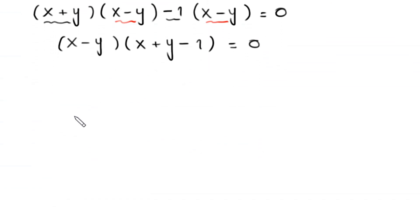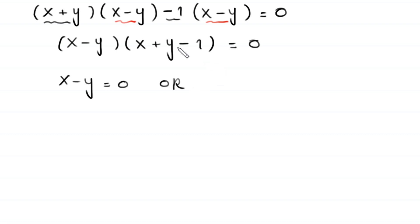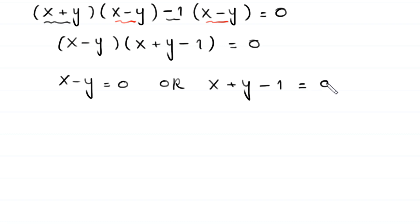From the factored equation, either x minus y equals 0, or x plus y minus 1 equals 0. These give us two cases to solve.